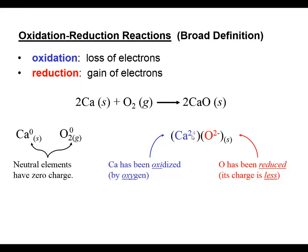Since oxidation is the loss of electrons, I would say that calcium was oxidized, but we would define it as the reducing agent because it causes oxygen to be reduced. Oxygen, which is the oxidizing agent, is itself reduced and is now at a lower charge.